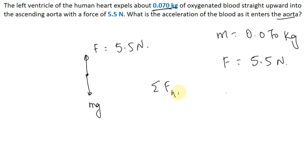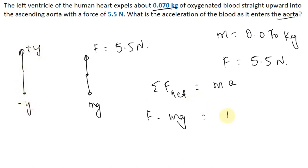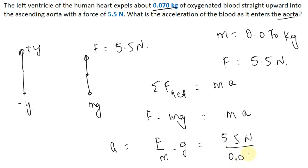Applying Newton's second law, the net force equals mass times acceleration. Taking upward as positive: F minus mg equals mass times acceleration, so acceleration A equals F over m minus g. Force is 5.5 Newton, mass is 0.070 kg, and g is 9.81 m/s².